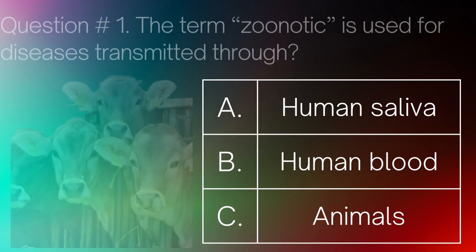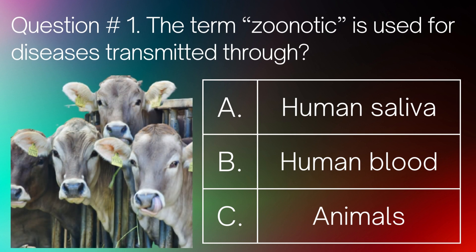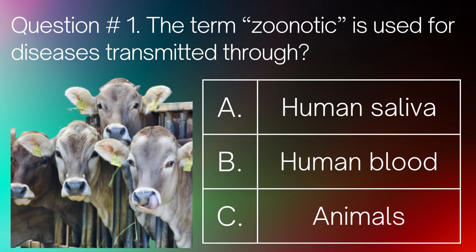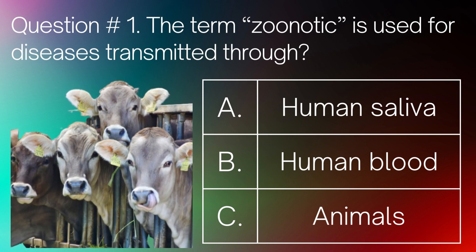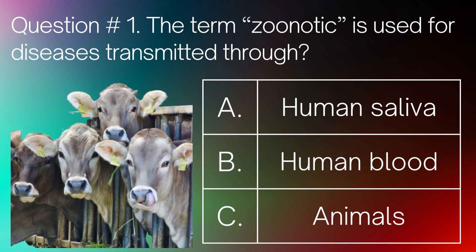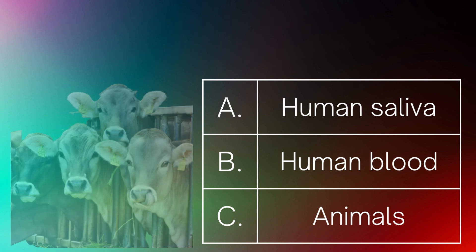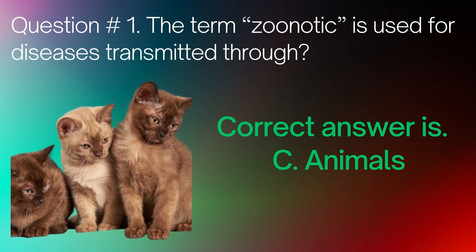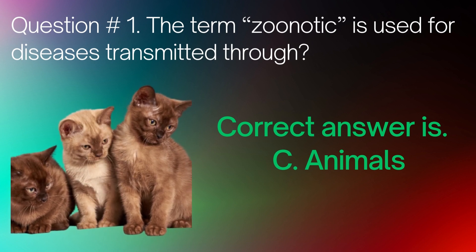Question number 1. The term zoonotic is used for diseases transmitted through? A. Human saliva. B. Human blood. C. Animals. Correct answer is C. Animals.